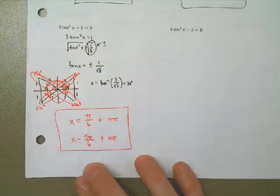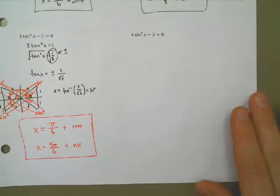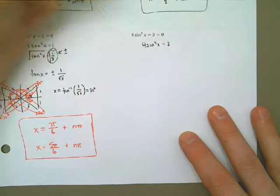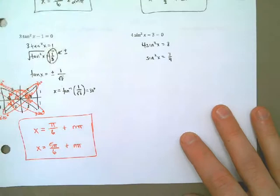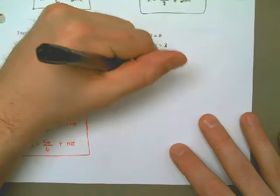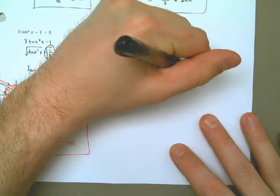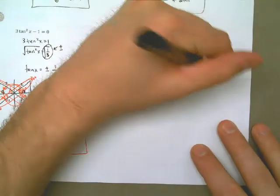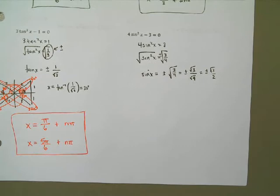Let's work the other one. I would get 4 times the sine squared of x is equal to 3. I would divide by 4, so sine squared of x is equal to 3 fourths. If I take the square root of both sides, remembering that I have plus and minus on the right side, I get the sine of x is equal to plus or minus the square root of 3 fourths. That's the same thing as plus or minus the square root of 3 over the square root of 4, which is plus or minus the square root of 3 over 2. That's probably going to end up being a 30-60-90 triangle.